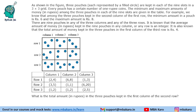Hello everyone, welcome to Aptitude Jab. This set from CAT 2019 Slot 2 DILR is a number puzzle. We are given a figure in which there are three pouches, represented by filled circles, kept in each of the nine slots in a three-cross-three grid.